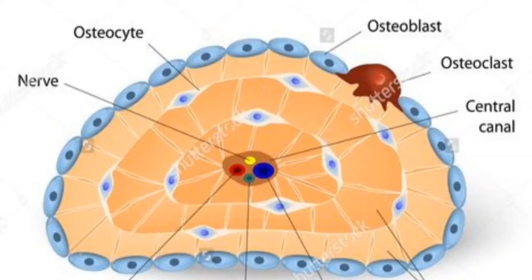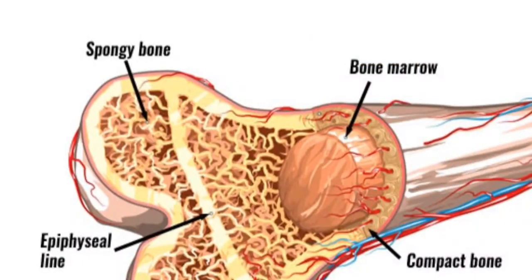Bone exerts important functions in the body, such as locomotion, support, and protection of soft tissues, calcium and phosphate storage, and harboring of bone marrow.